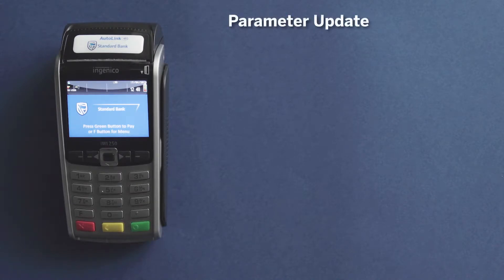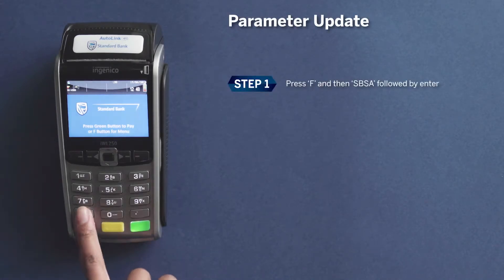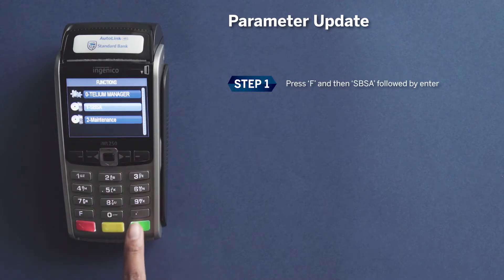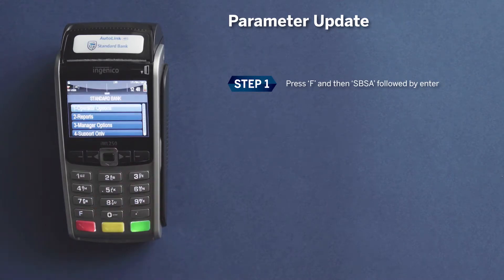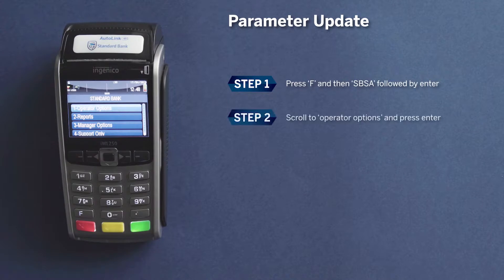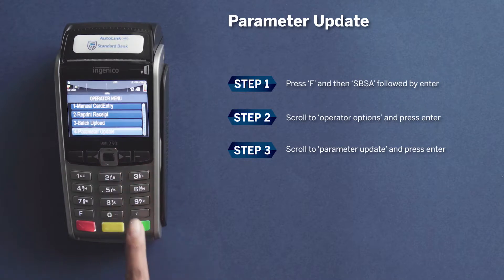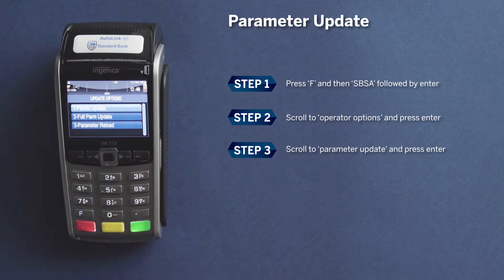You can, however, also manually update parameters by following these steps. Press the F button. Scroll to SPSA and press Enter to select. Scroll to Operator Functions and press Enter. Scroll to Parameter Update and press Enter.